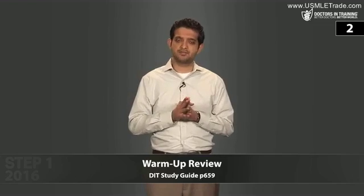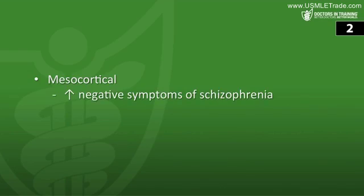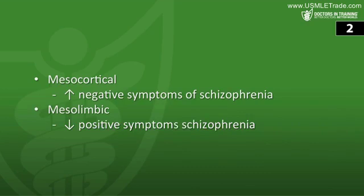Next question: what is the result of blocking each of the following dopaminergic pathways? If you block the mesocortical pathway, you have an increase in the negative symptoms of schizophrenia, like social withdrawal and depression. If you block the mesolimbic pathway, you relieve the positive symptoms of schizophrenia. This is the pathway you are targeting with neuroleptic drugs — your anti-schizophrenic drugs that are dopamine antagonists.